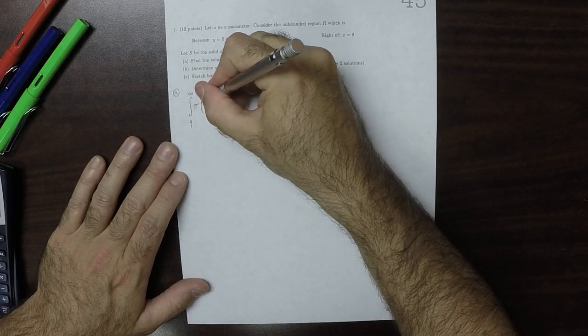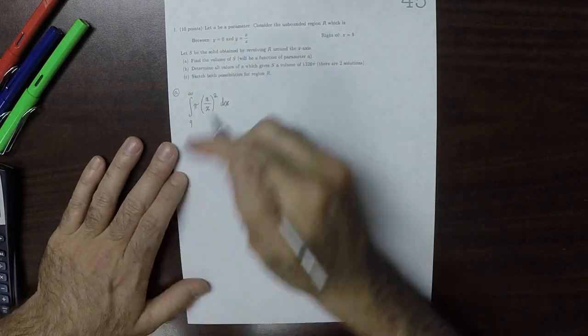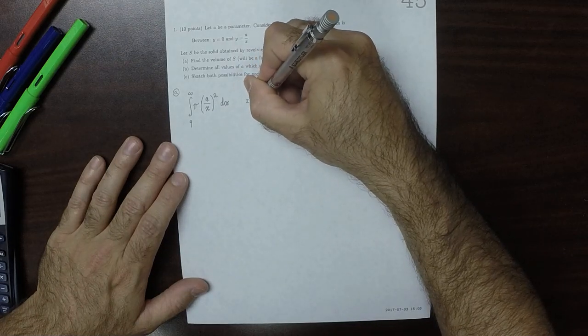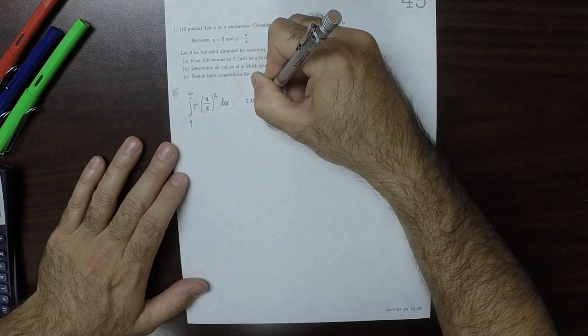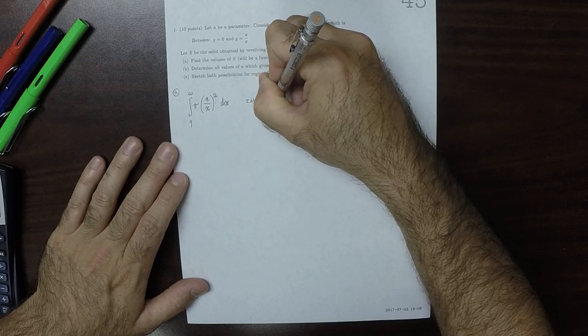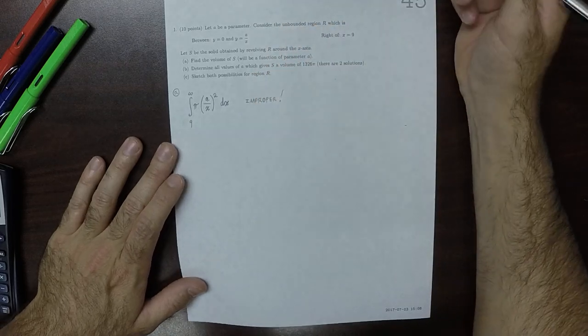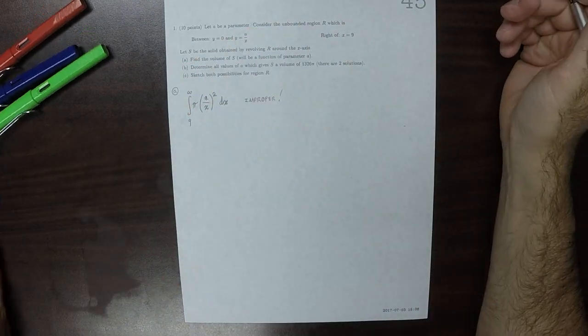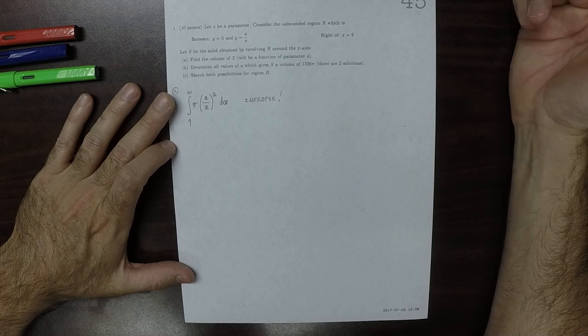So then, now, this is an improper integral. And the reason why it's improper is because that represents an unbounded shape.